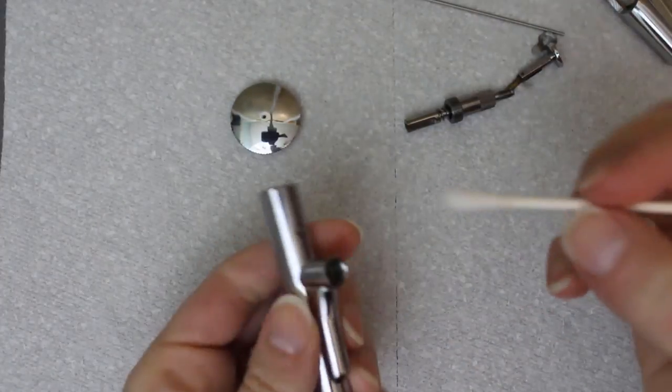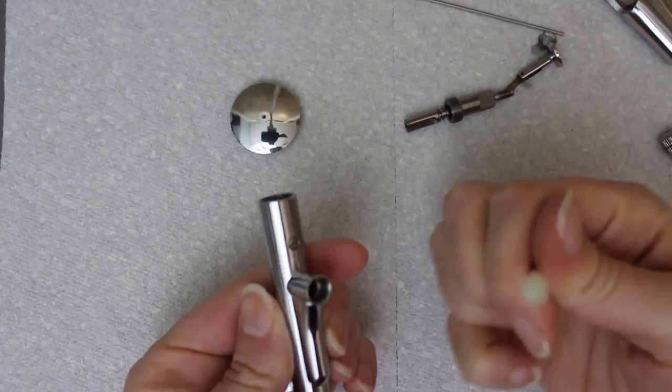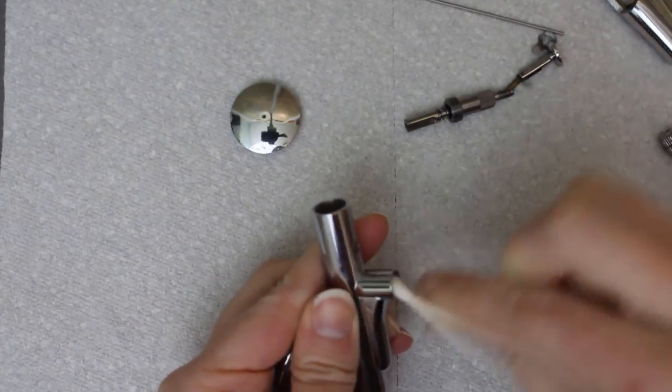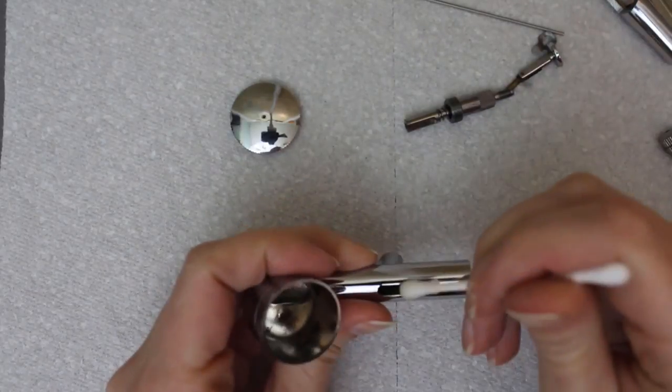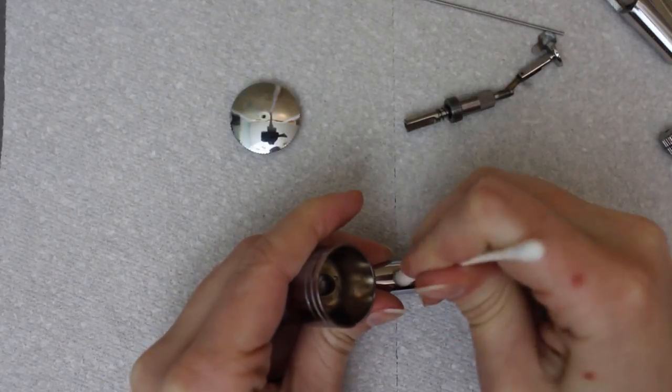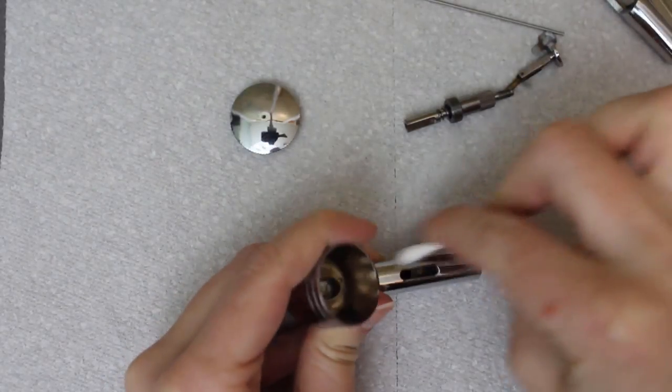Since I'm trying to fix a sticky trigger, I'm going to use rubbing alcohol on a cotton swab to clean the air valve and the space around the trigger. I'm picking up a lot of old oil and lubricant, which gets sticky after a while, so that may be part of the issue.